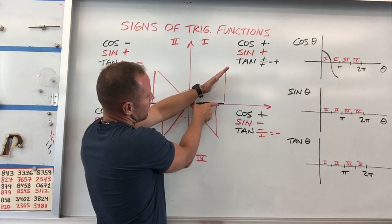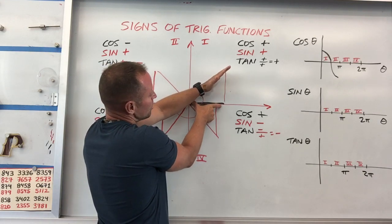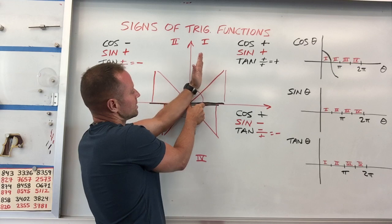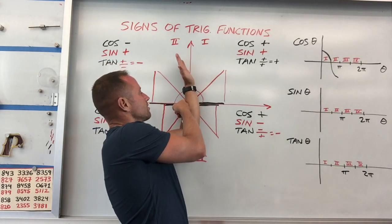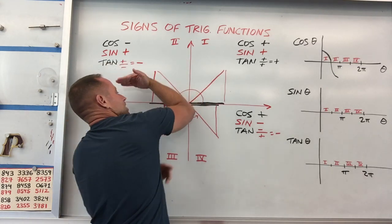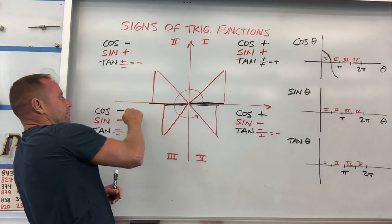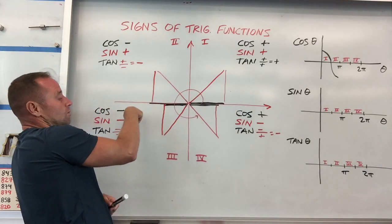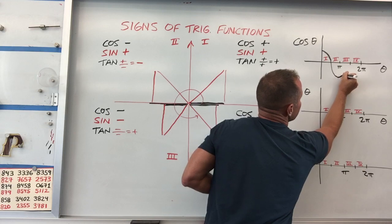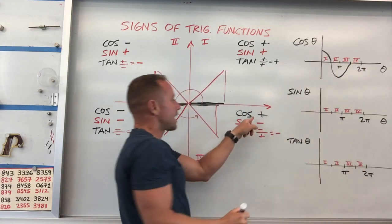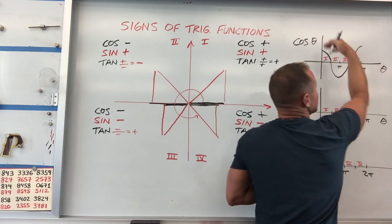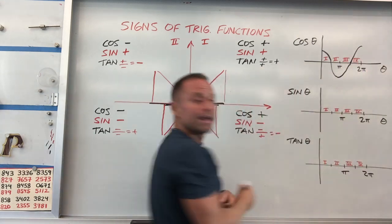Cosine is keeping track of the horizontal projection. So the horizontal projection is positive, positive, positive, getting smaller, zero — then it goes negative, negative, negative. And the horizontal projection is going to continue to be negative while you're over here in quadrant three. So cosine continues to be negative while you're in quadrant three, and then goes back to being positive when you're in quadrant four. So there's your cosine wave developing.